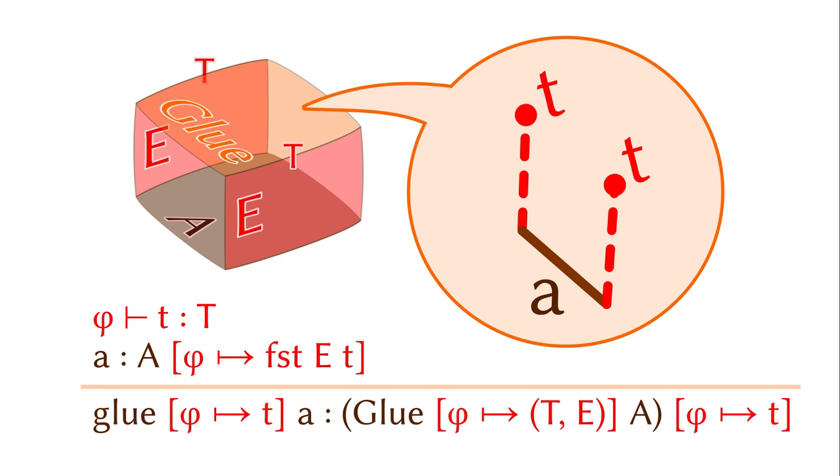The next one is the introduction rule. Suppose there is a partial element T of the partial type capital T and an element in the bottom type that agrees with the image of T under the equivalence. We can construct elements in the glue type as shown. Moreover, under the constraint phi, it equals to T.